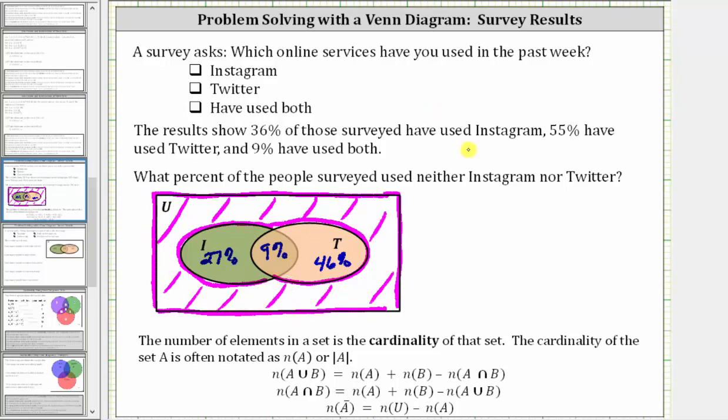To find the percent that are in the universal set but not in set I or set T, we begin with 100%, which represents all the people surveyed, and subtract out the percent in set I or in set T, which would be 27% plus 9% plus 46%, which gives us 100% minus 82%, which is equal to 18%. So the percent of people surveyed that use neither Instagram nor Twitter is 18%.